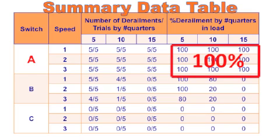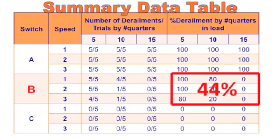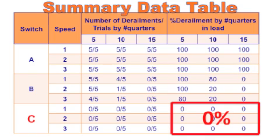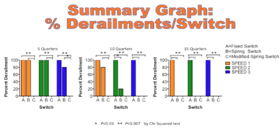Switch A's results were 100% derailment. Switch B's results were 44% derailment. And switch C's results were 0% derailment. This graph summarizes the data. The chi-squared test was used to determine statistical significance.